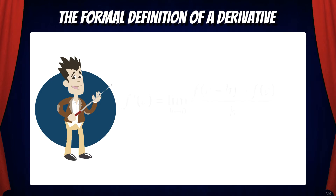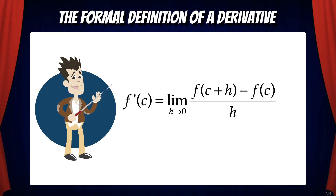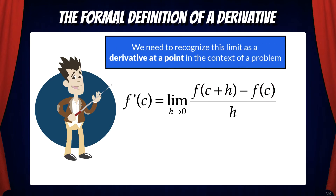Now, if we plug in a specific x value, x equals c, then our equation becomes f prime of c equals the limit as h goes to zero of f of c plus h minus f of c over h. We also need to learn to recognize this in the context of a problem.